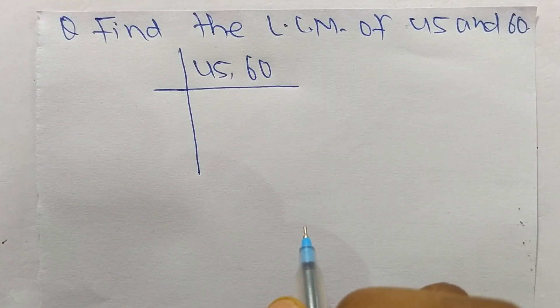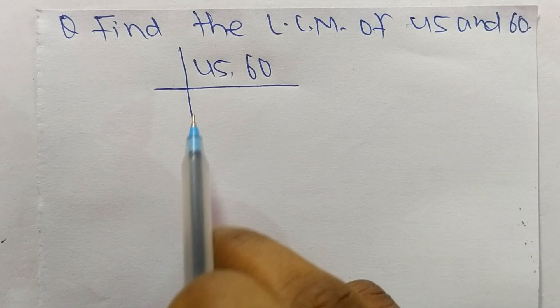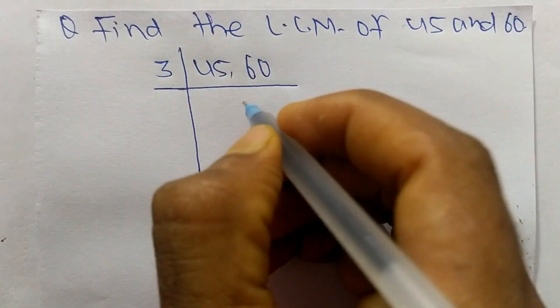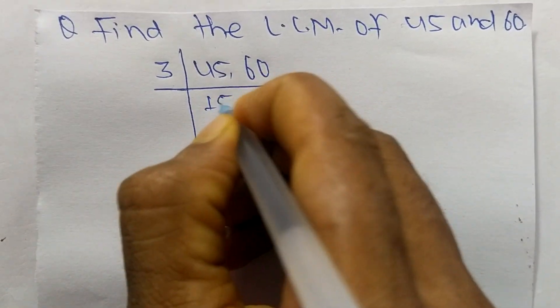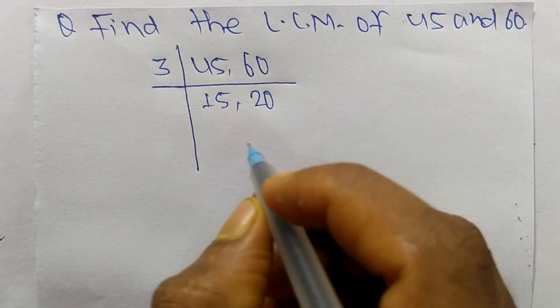To find LCM, first we choose the lowest number that can exactly divide 45 and 60. So the number is 3. So 3 times 15 equals 45. 3 times 20 equals 60.